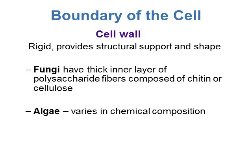In algae, the cell wall can vary in chemical composition. Algae can have chitin or cellulose where they're more plant-like, but some algae have more of a glass or silicon cell wall — a very hard, glass-like cell wall. It just depends on the species of algae. A lot of times we use the cell wall composition to group algae into different groups for taxonomy.